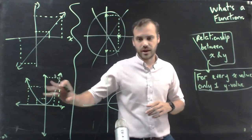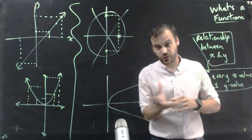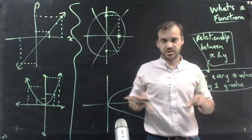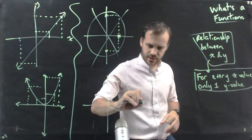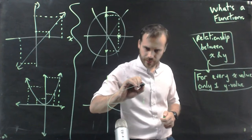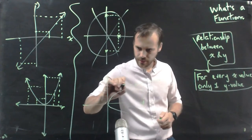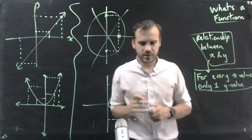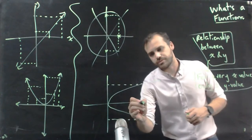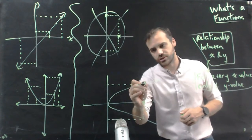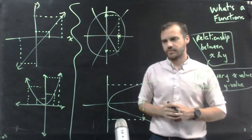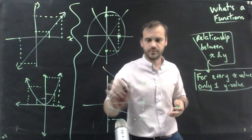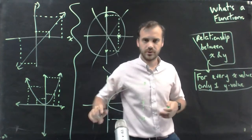If I take one of these — a parabola — and draw it on its side like this, this is not going to be a function. Here's our x-value. You can see that for this particular x-value, there are two y-values. It's not a function.